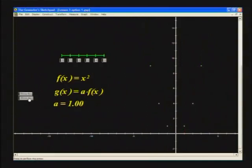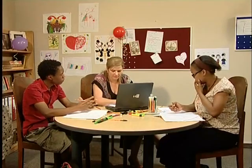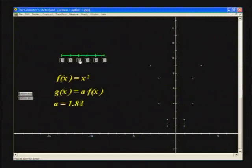Okay, so if we change A from 1 to 2, then all those points should move further away from the x-axis. I think you're right, but let's check. See, I'm not just a pretty face.